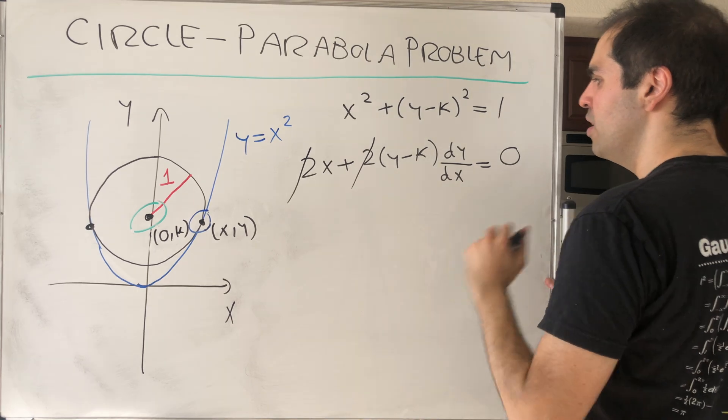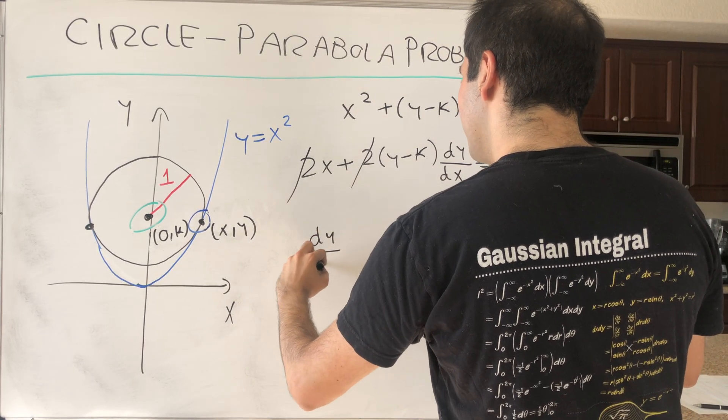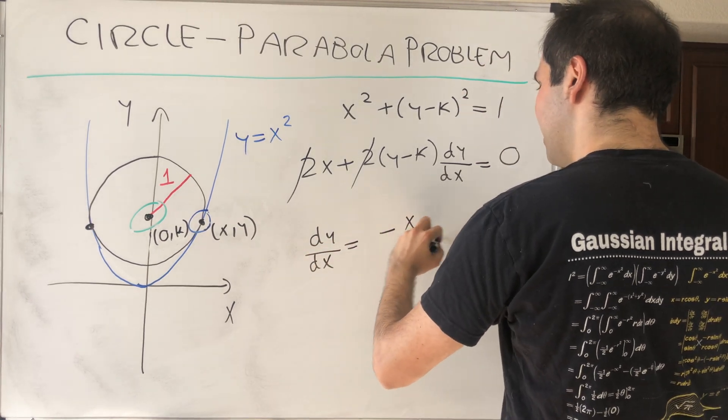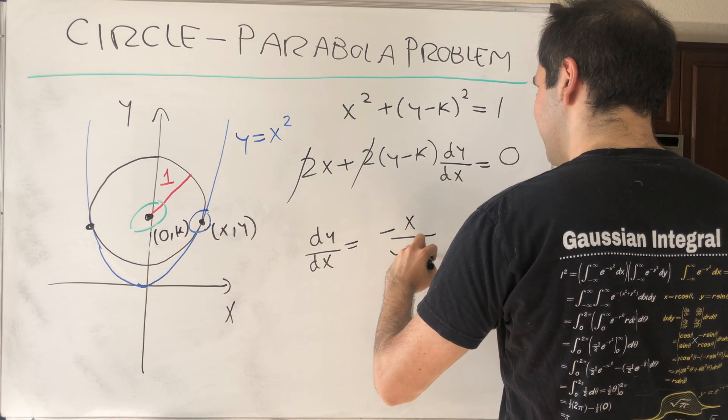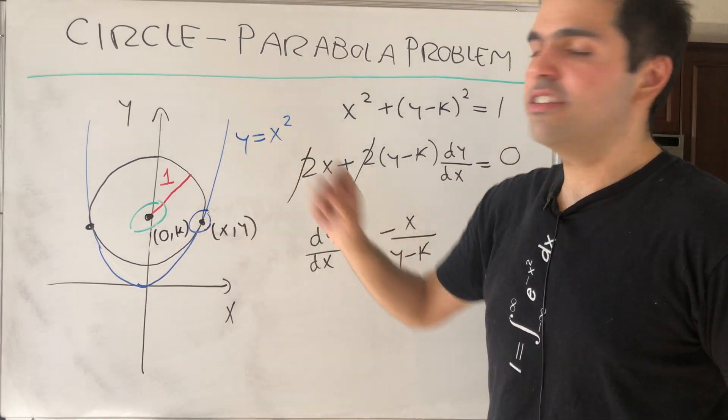And then, you can cancel out the two and solve for dy/dx. So dy/dx becomes -x/(y - k). That's on the one hand because the point is on the circle.